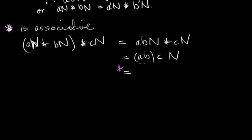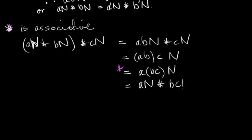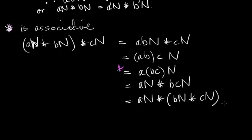Since G is a group, this is the operation in G, and we know that A(BC)N equals AN star BCN by the definition of star, which equals AN star (BN star CN). So star is associative.